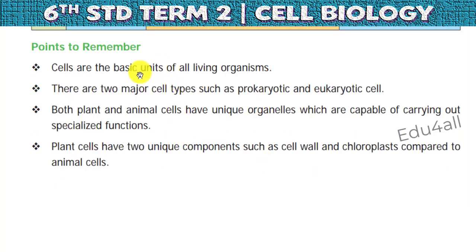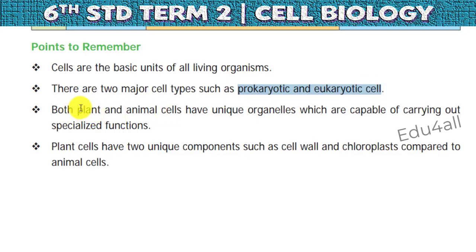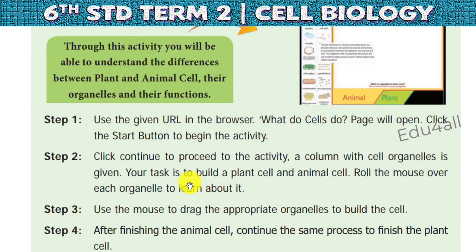So you should understand that all organisms are made up of cells, and the cell is the basic unit of living organisms. Based on the nucleus, we classify cells into prokaryotic and eukaryotic cells. Both plant cells and animal cells have unique cell organelles and carry out specialized functions. Plant cells have two unique components — cell wall and chloroplast — compared to animal cells. There is an ICT activity which will be shared in the next video. If you have any doubts, keep a comment. Thank you.